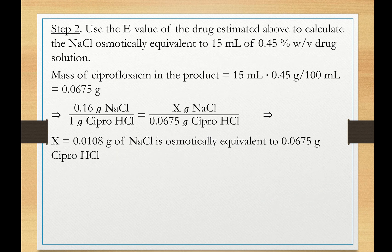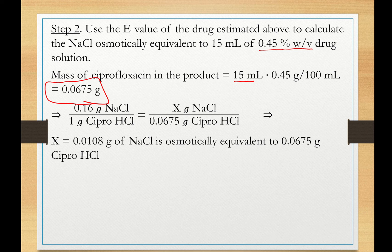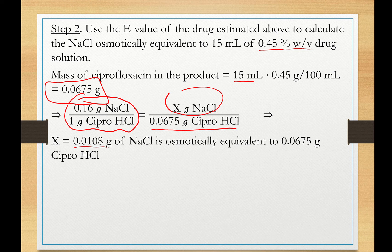In Step 2, we use the E-value of the drug to calculate the sodium chloride osmotically equivalent to 15 mL of 0.45% w/v ciprofloxacin. We multiply the volume by the concentration to find the mass of drug: 0.0675 grams of cipro. Using the E-value ratio, we calculate that 0.0108 grams of sodium chloride is osmotically equivalent to the amount of drug in solution.